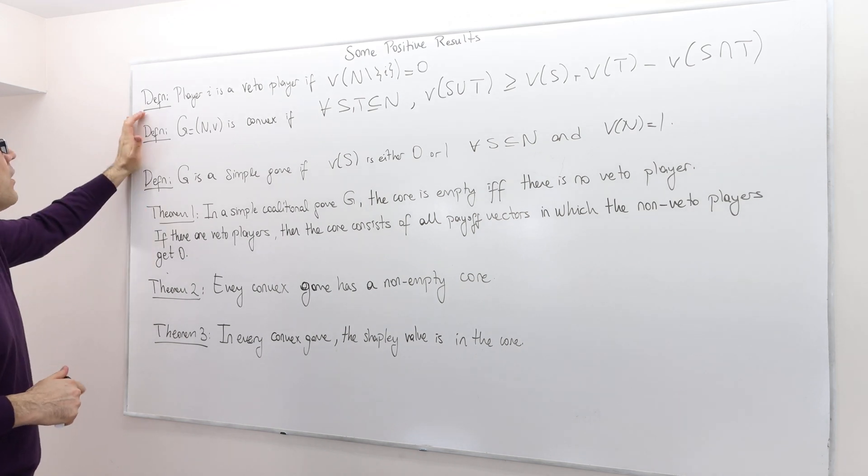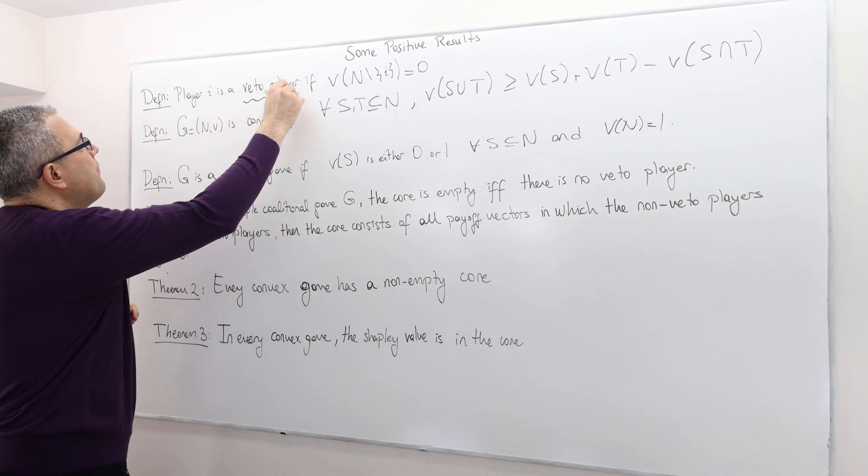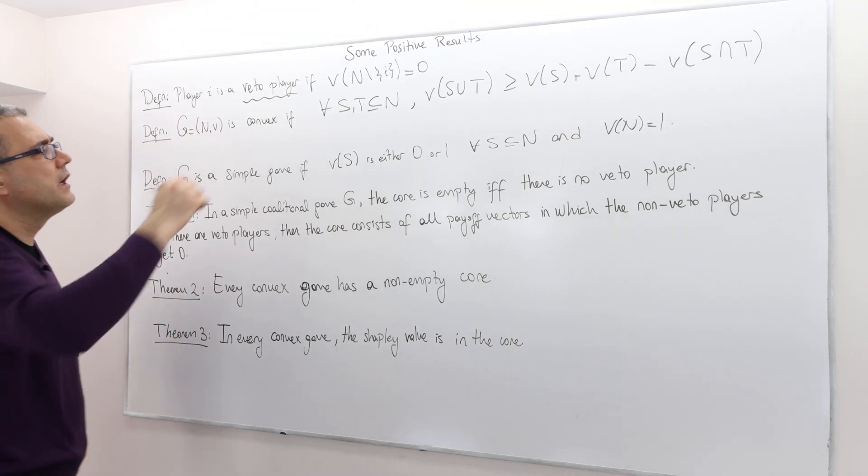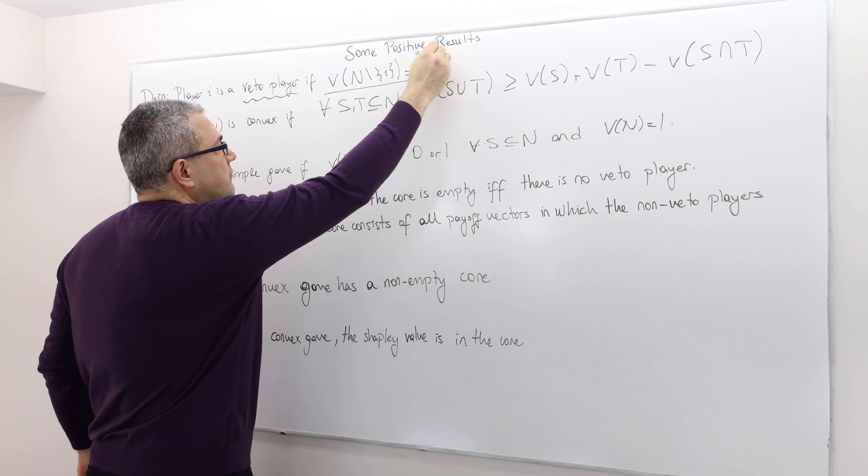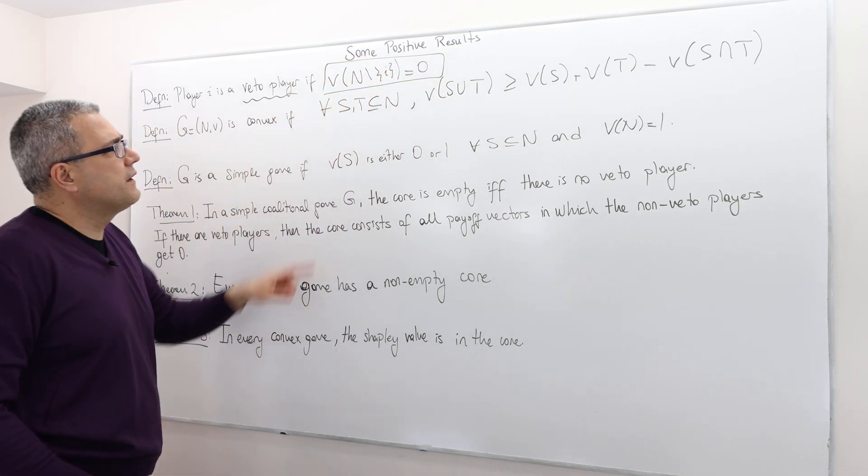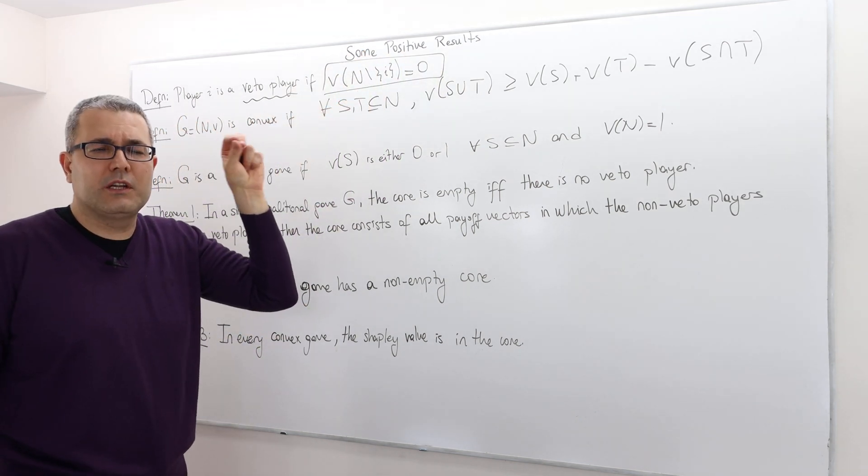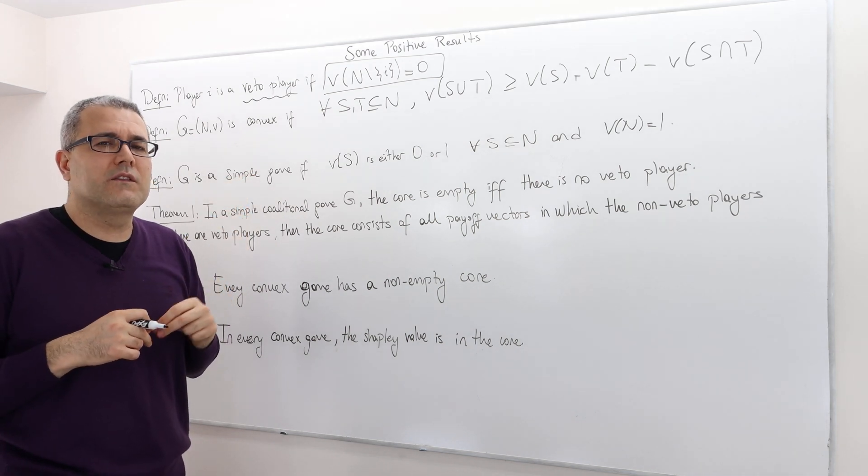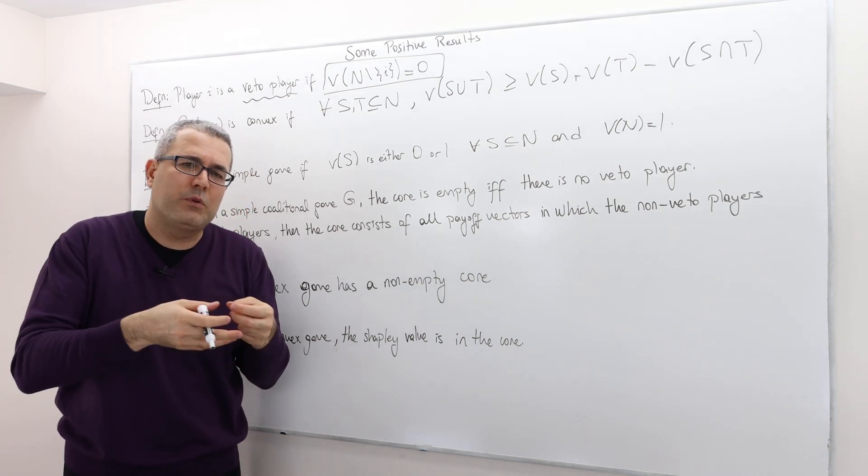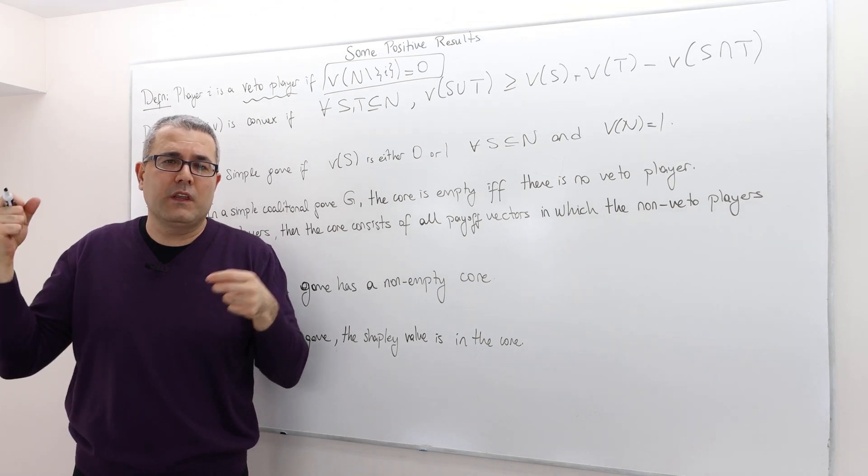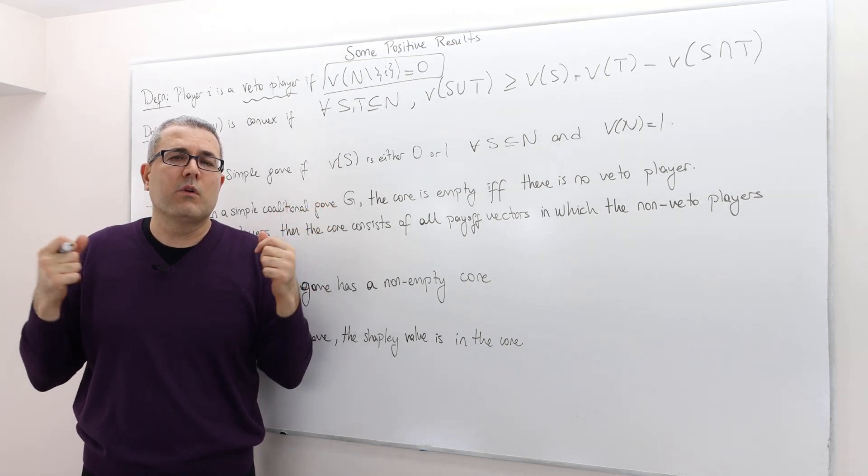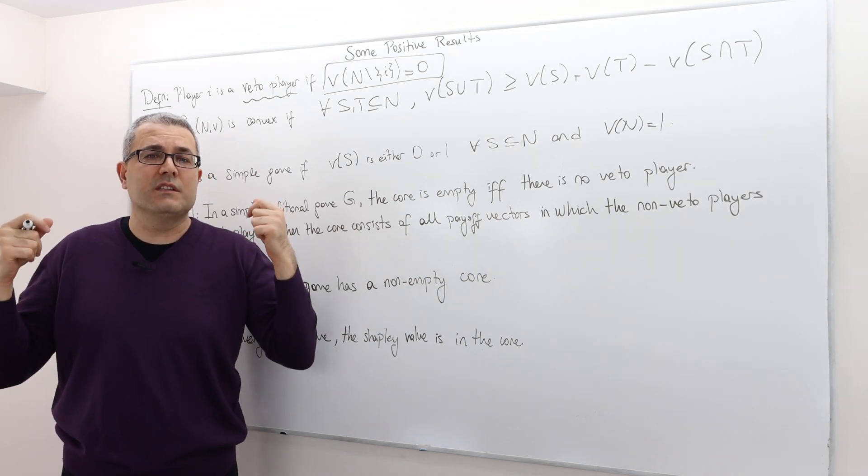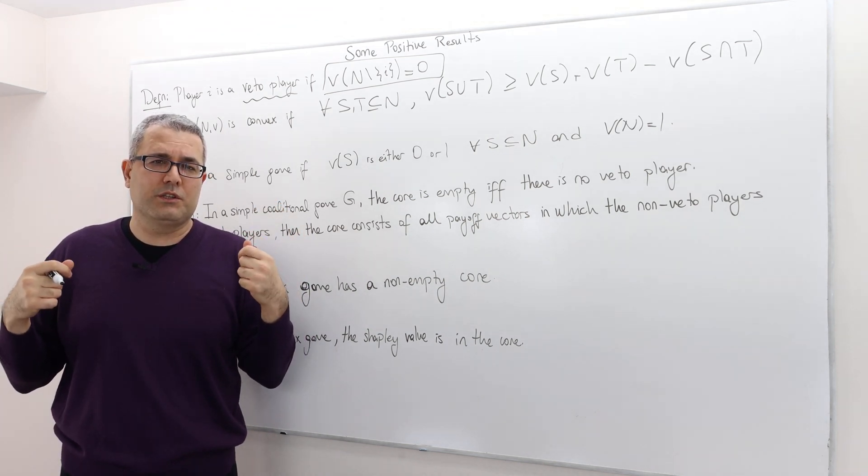So the first one is called veto player. We call player i a veto player if the worth of this coalition, grand coalition minus i, is equal to zero. So what does that mean? That means if you take player i out of the grand coalition, well, then the value of this coalition is zero or the worth of this coalition is zero.